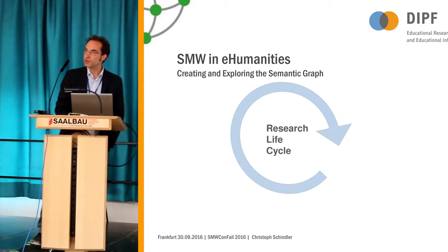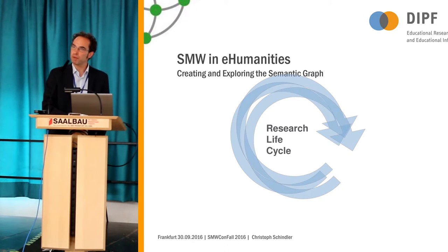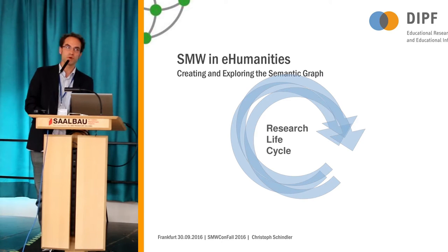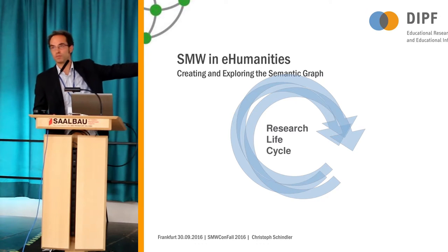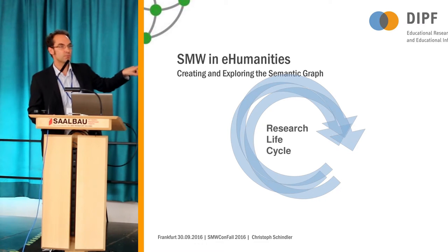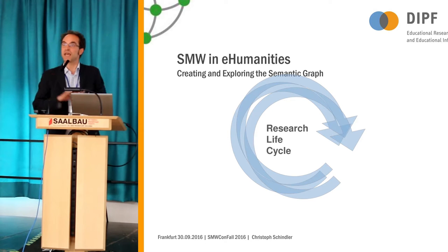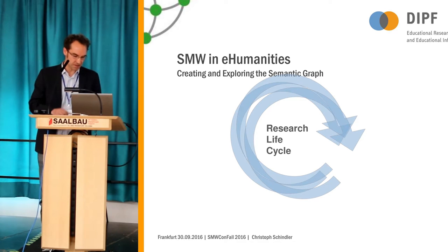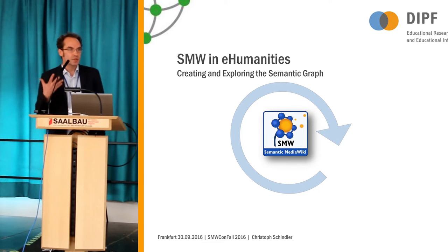Everyone knows the research process should be cyclic. In humanities it's a bit problematic — it's much more fuzzy. The main point is that the real metadata schema you have usually at the end of the project. The relevant objects and metadata change during the whole process. They are searching for objects, different kinds of objects and their relations, how they can be represented. At the end it's fixed, but at the beginning it's really fuzzy and not clear. But this is perfect for SMW and a great use case to use these kinds of possibilities.